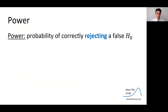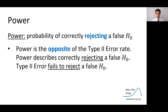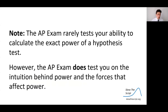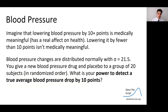Finally, one related topic is power. Power is the probability of correctly rejecting a false null hypothesis — the opposite of the type 2 error rate. Let's talk about this using a blood pressure example. Imagine that lowering blood pressure by 10 or more points is medically meaningful, and by fewer than 10 is not. Blood pressure changes are normally distributed with a standard deviation of 21.5. You give a new blood pressure drug and placebo to 20 subjects in randomized order. What is your power to detect a true average blood pressure drop of 10 points?